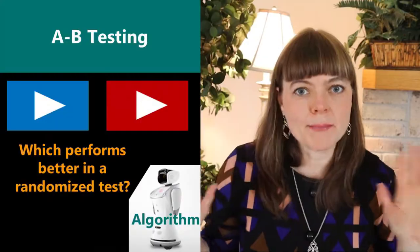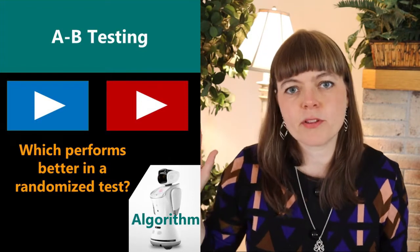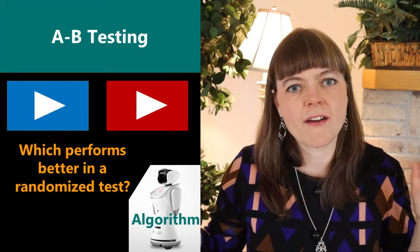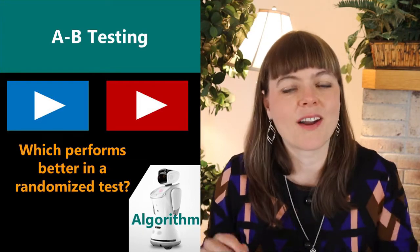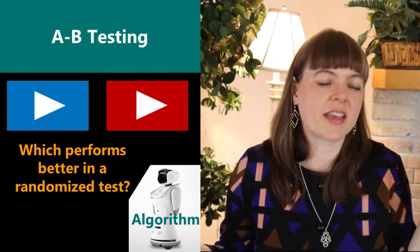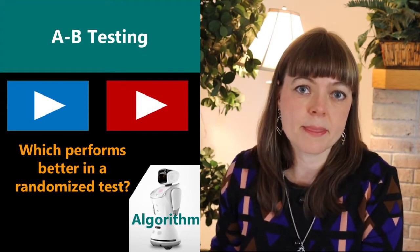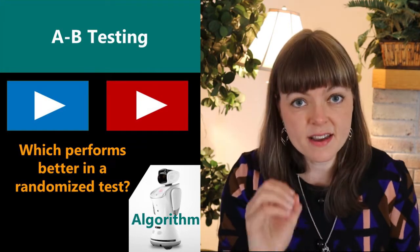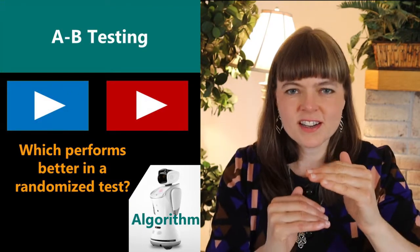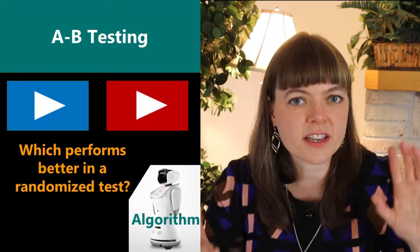So we know that algorithms do A-B testing, which is basically a mini controlled experiment where they show some people the blue version and some people the red version of some sort of advertisement or some sort of button on their screen. And they just randomize who gets to see what and then they select whichever one performs best. That's classic A-B testing. But that is, of course, the zoomed in version of evolution, right? That's the version of evolution that says, okay, I'm just determining success based on what happens immediately after showing this person, do they click or not?